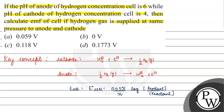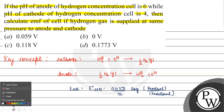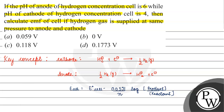For E°_cell, what will happen? It will be 0, because we have standard conditions. So E°_cell will be 0 for hydrogen.